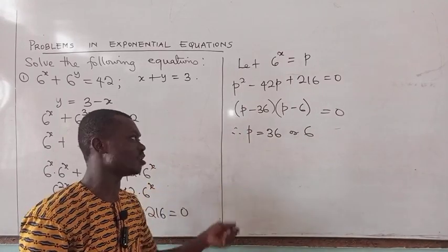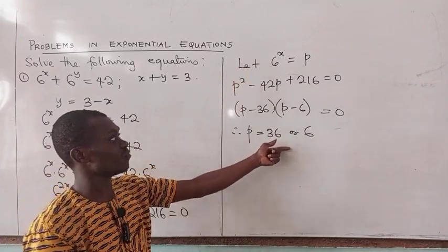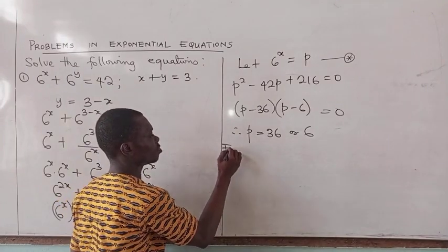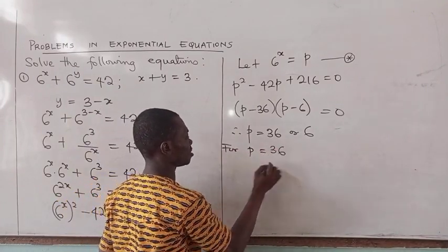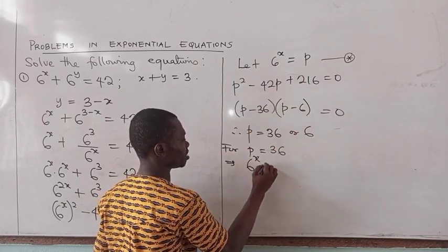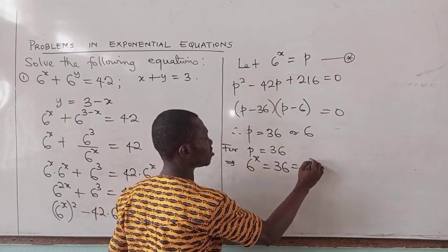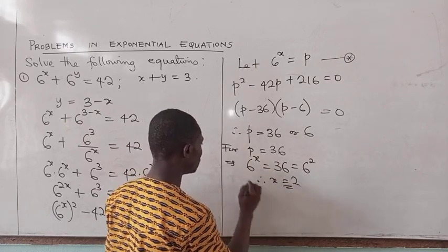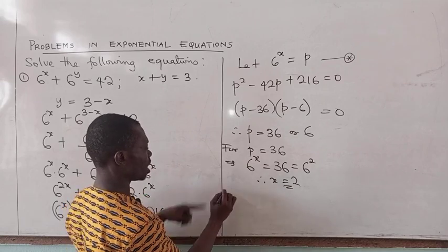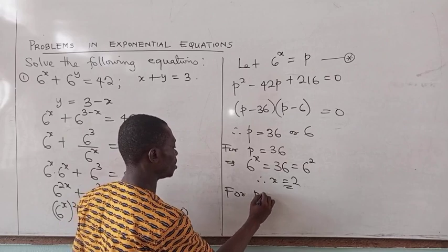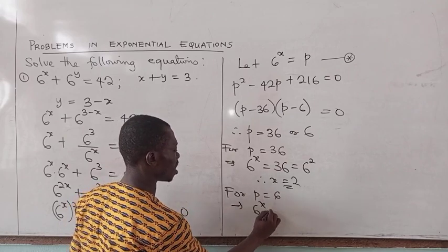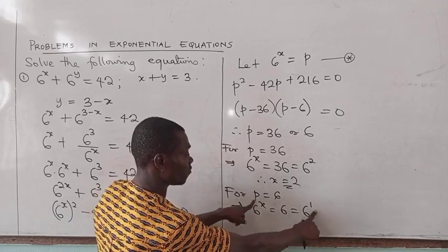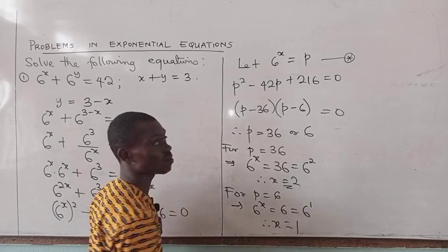Remember that p represents 6 raised to the power x, so we need to find x. For p equal to 36: 6 raised to the power x equals 36, which is 6 raised to the power 2. Equal bases, therefore x equals 2. For p equal to 6: 6 raised to the power x equals 6, which is 6 raised to the power 1. Therefore x equals 1.